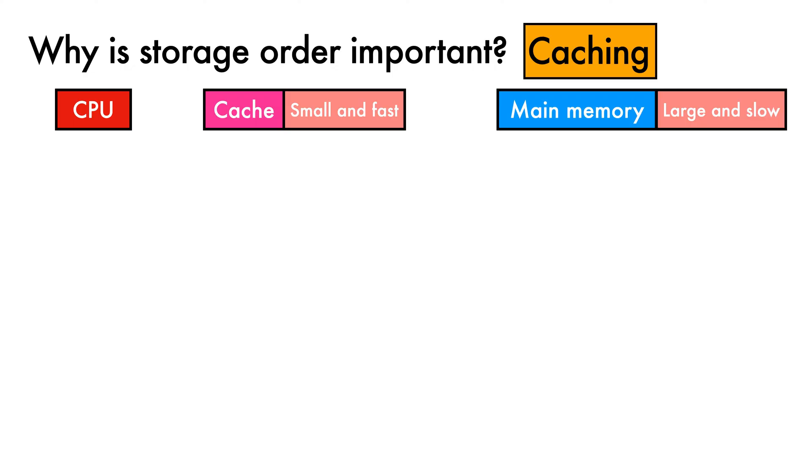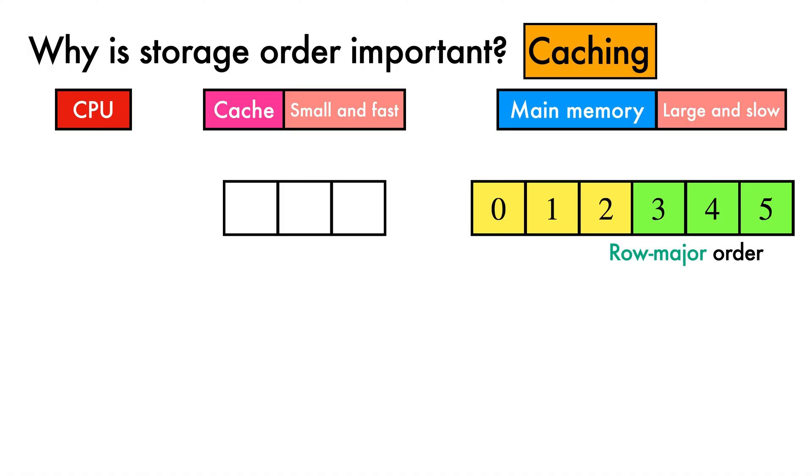We'll assume that our simple cache has one line of storage with space for three data elements, and that the matrix we looked at previously has been stored in memory in row major order. Now suppose we wanted a task like print each value in our matrix in ascending order.